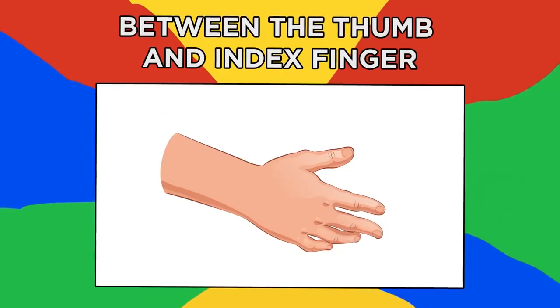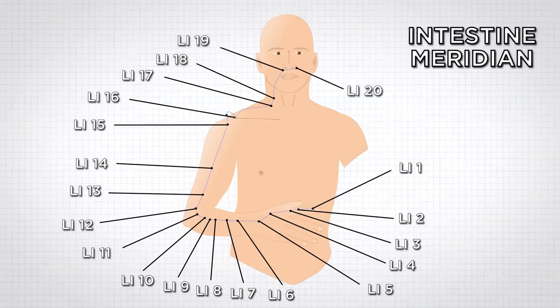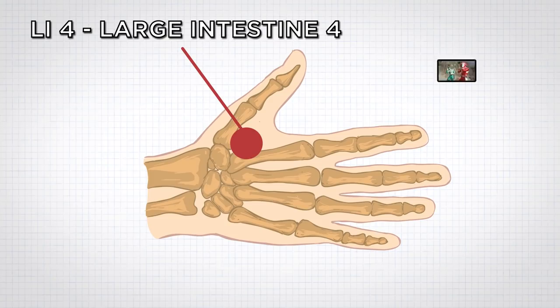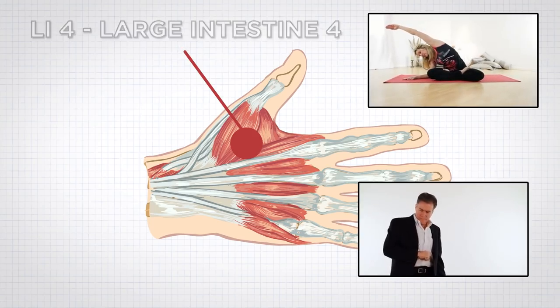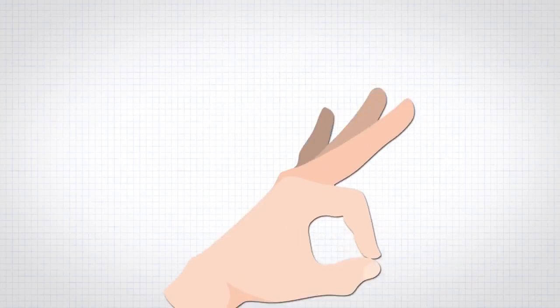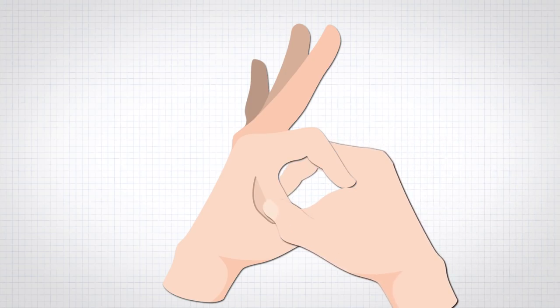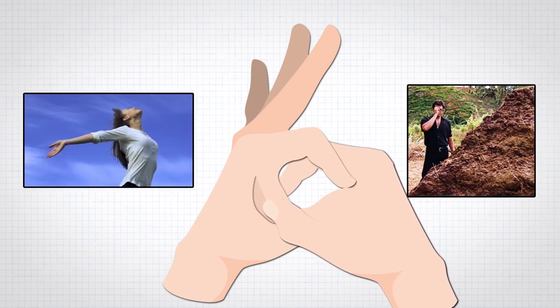Number 6, between the thumb and index finger. One of the most important pressure points runs along the large intestine meridian and is known as the adjoining valley. LI4 or large intestine 4 is notorious for headache relief, but also relaxes muscle tension and regulates bowel function. To locate this point, squeeze your thumb and index finger together and notice the fleshy area that appears in the webbing. Using your other hand, press this spot for 30 seconds to induce tranquility and welcome a digestive cleanse.